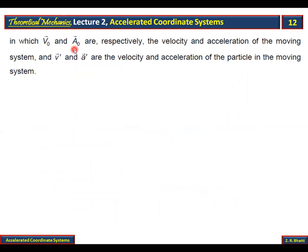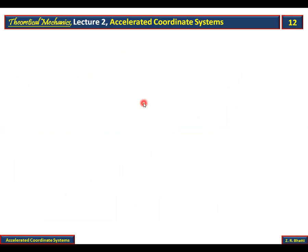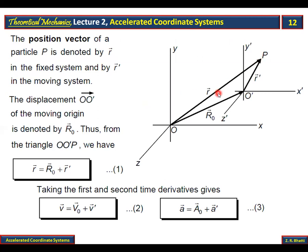In which V-naught and A-naught are respectively the velocity and acceleration of the moving system, and V-dash and A-dash are the velocity and acceleration of the particle in the moving system. The position of the particle in the moving system is R-dash, V-dash is the velocity in the moving system, and A-dash is the acceleration.